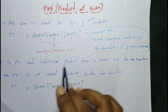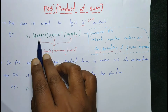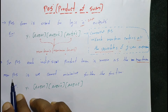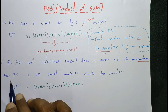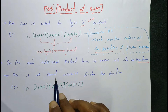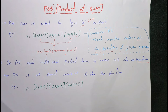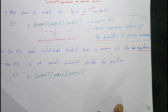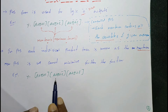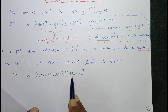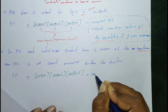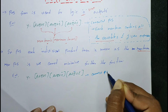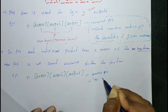In POS form, each individual sum term is known as a max term. In minimal POS or max POS, you cannot minimize the function further. For example: y equals to (A + B + C)(A + B + C̄)(A + B̄). This is the canonical POS form for logic 0 operation.